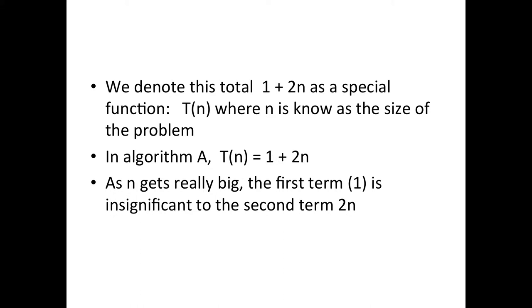Because of that, because we're just categorizing algorithms, we can drop off this what's called an insignificant term. So the important term is this 2n.